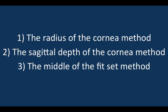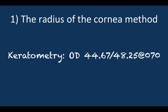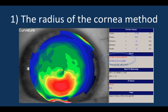The radius of the cornea method, the sagittal depth of the cornea method, and the middle of the fit set method. The corneal radius or base curve method requires you to take keratometry readings or identify the steepest K reading of the patient's topography. The fitting guide will then direct your first lens selection using these measurements.